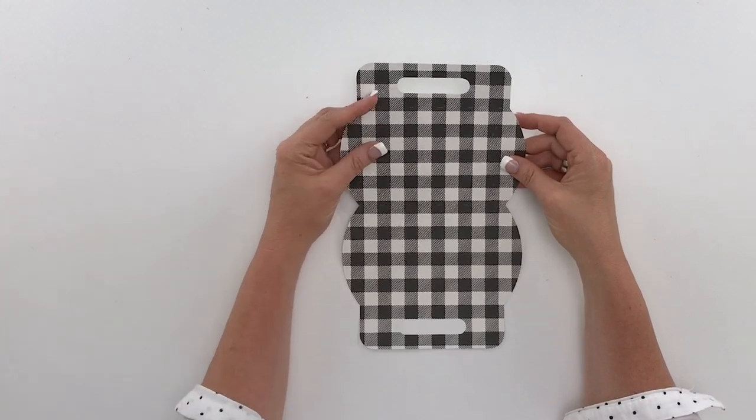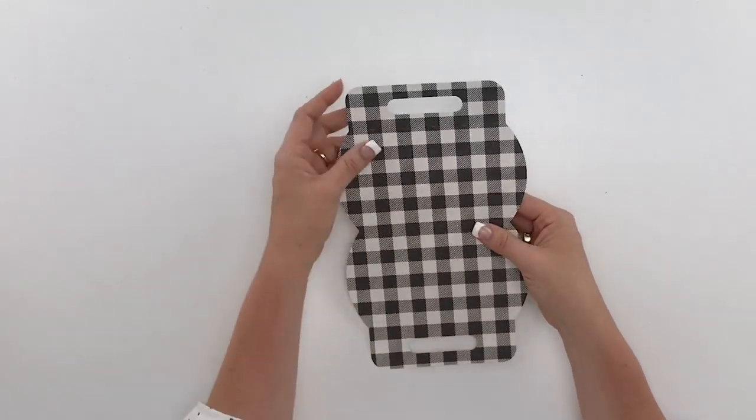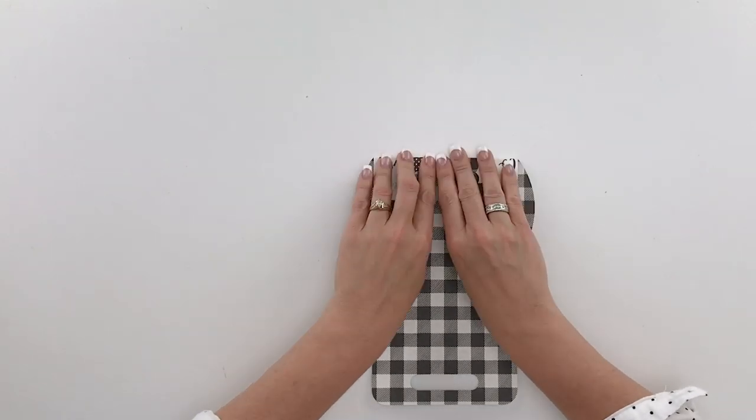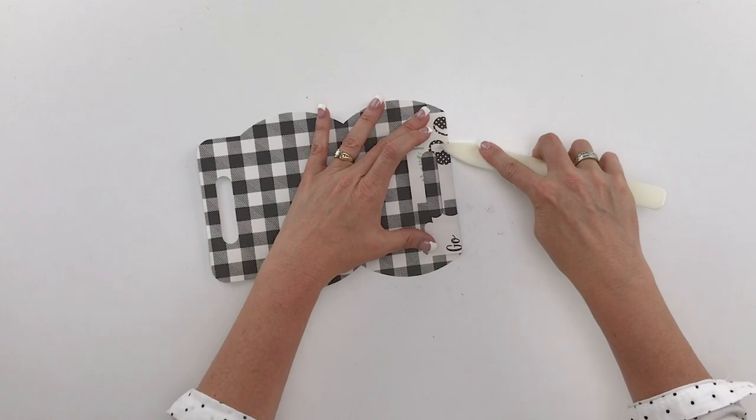So to make this box it's really quite easy. You need to cut it out of some cute paper. I'm using some paper from my new Forward with Faith collection with Echo Park.